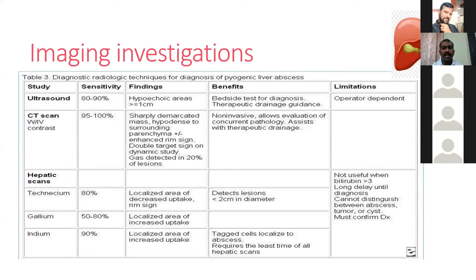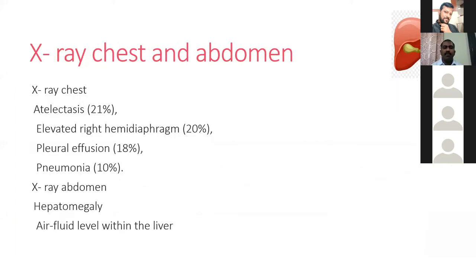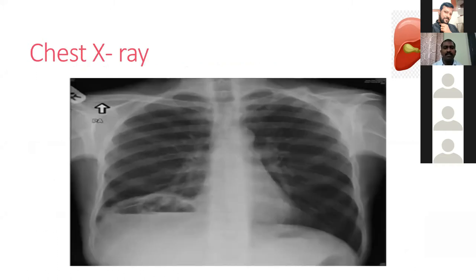Hepatic scans using technetium, gallium, or indium are very rarely used. On X-ray, patients may show atelectasis in around 21%, elevated right dome of diaphragm in around 20%, pleural effusion, or pneumonia. X-ray abdomen may show hepatomegaly; very rarely, an air-fluid level within the liver may be seen, which is a feature of pyogenic liver abscess. Here you can see an X-ray showing the elevated dome of diaphragm with an air-fluid level.